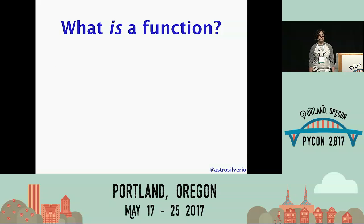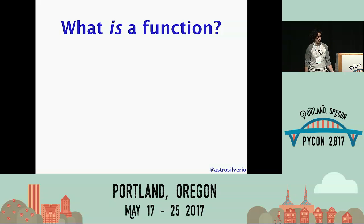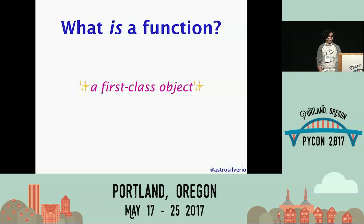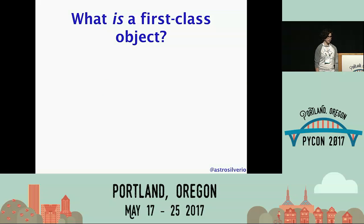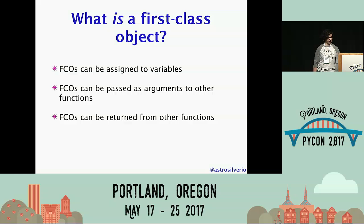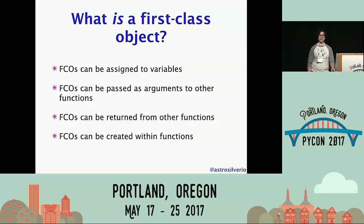In order to gain intuition for how a decorator works, we first need to make some explicit statements about the objects that decorators are frequently applied to. Technically, decorators in Python can be applied to either functions or classes — more on that later — but stick with functions for now. Very simply, in Python, functions are first-class objects. First-class objects are entities that can be assigned to variables, passed to functions, returned from functions, and dynamically created within functions.